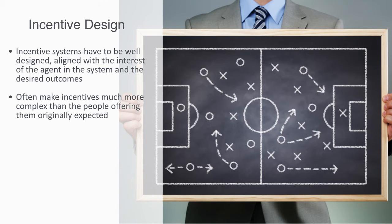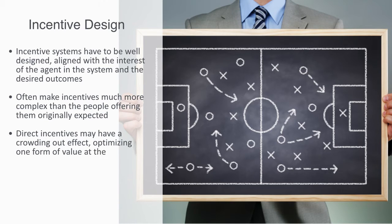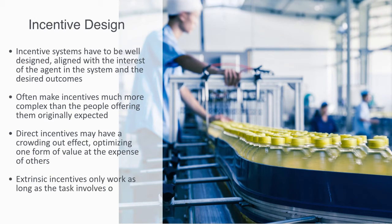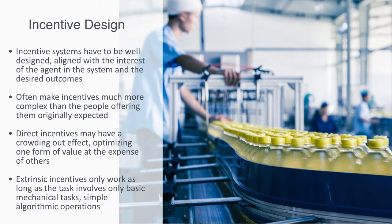Added to this, direct incentives may have a crowding-out effect. If we only take into account one form of value, we may try to optimize it at the expense of others, with the overall throughput becoming sub-optimal. Extrinsic incentive systems work well when there is a clear set of steps and a well-defined expected outcome or goal, but they only really work for analytical processes as they narrow our focus. Research has shown that when tasks become more complex — as soon as they involve cognitive skill, creative skills, or conceptual capabilities — extrinsic incentives were no longer effective and actually led to poorer performance.